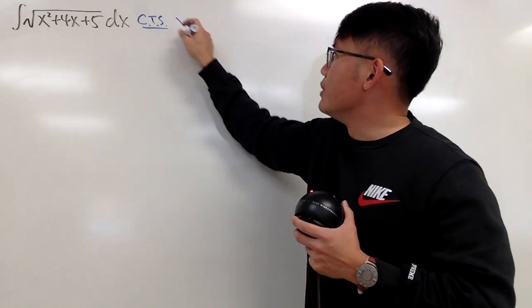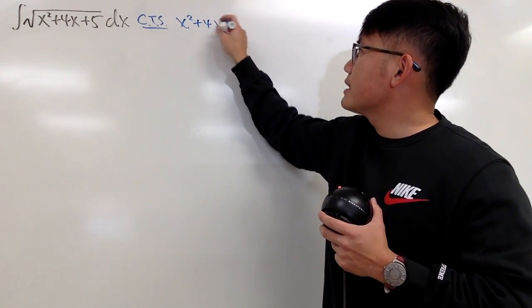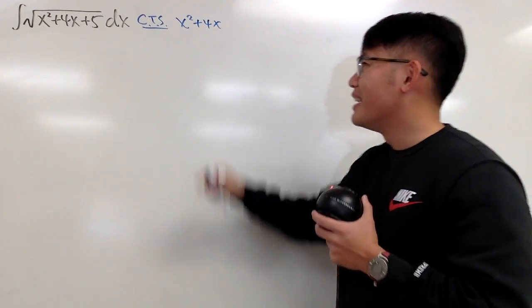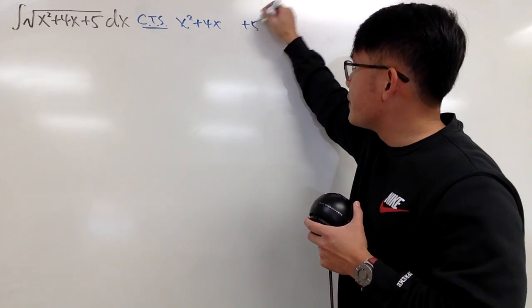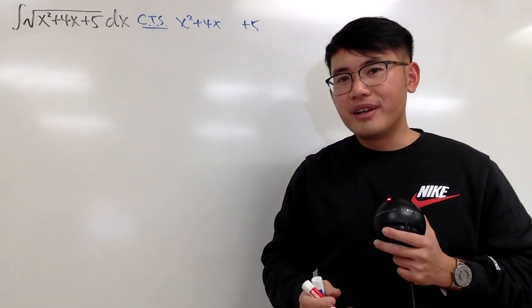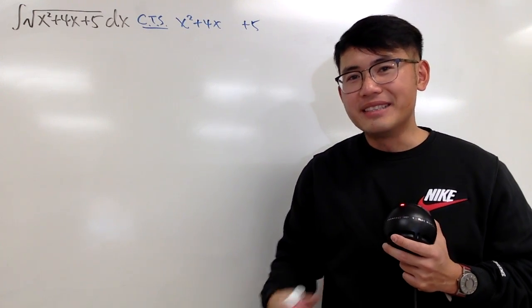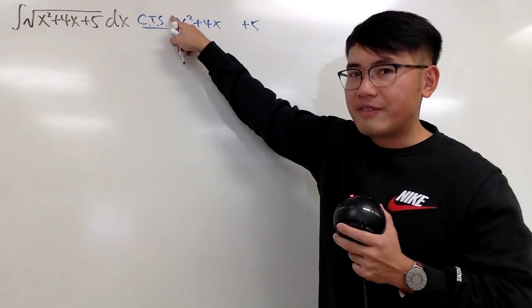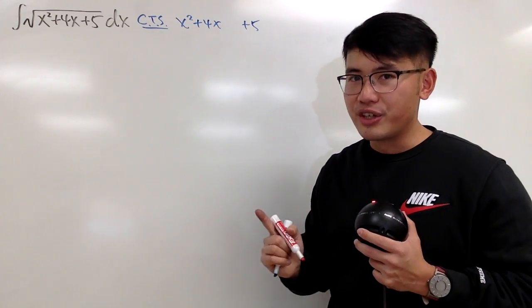Let's focus on the inside, which is x squared plus 4x, but I'm going to leave a gap for the magic number I will show you. And then I will just put on the plus 5 here. And now you might be wondering, what's the magic number and how can we find it? Well, first of all, you have to make sure that we have a 1 in front of the x squared, which we do. That's good.